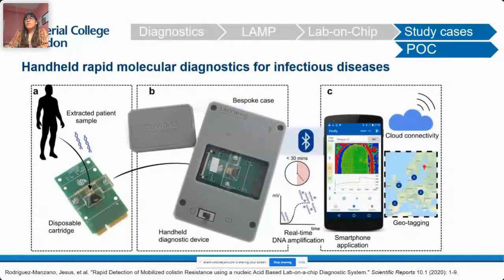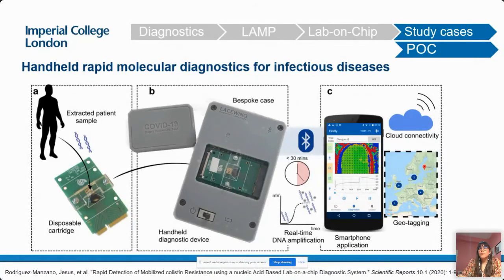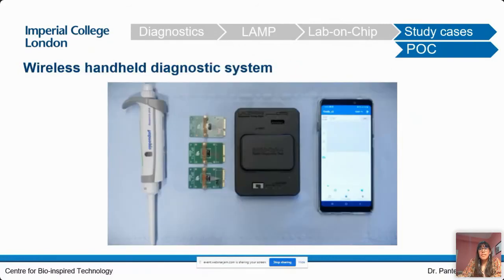Translation into the point of care for surveillance can be achieved with this platform due to the incorporation of cloud connectivity and portability. This handheld portable platform is easily adaptable to any pathogen, as only the assay changes — targeting the DNA or RNA of the pathogen of interest. Here we can see several cartridges, the platform, and a mobile phone with the dedicated app.